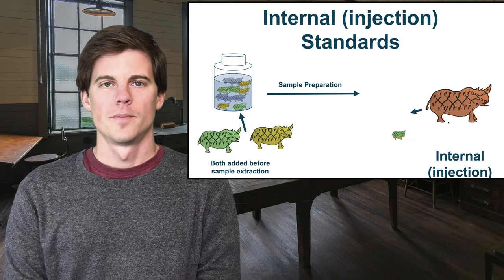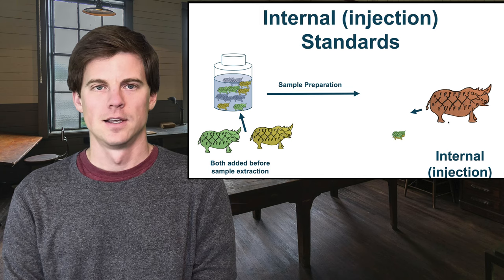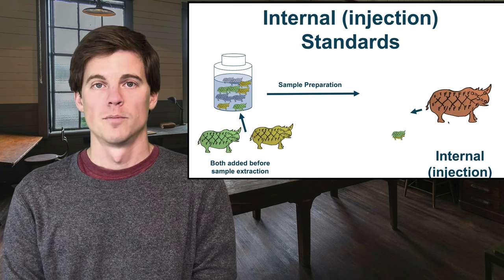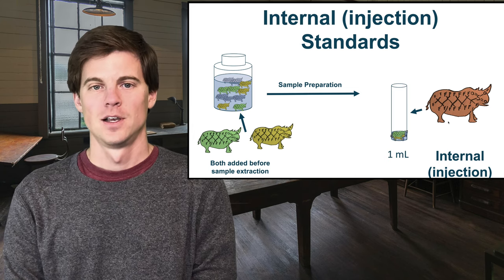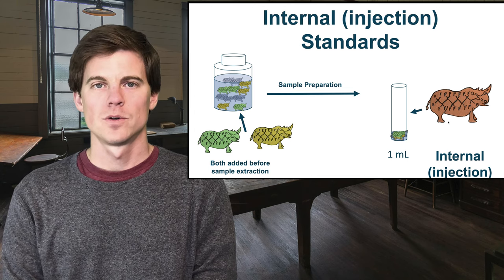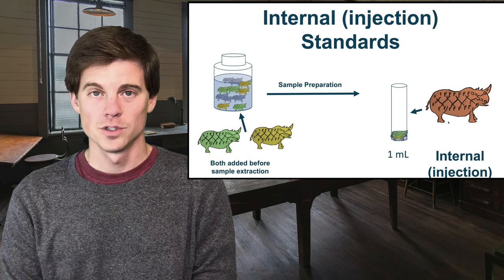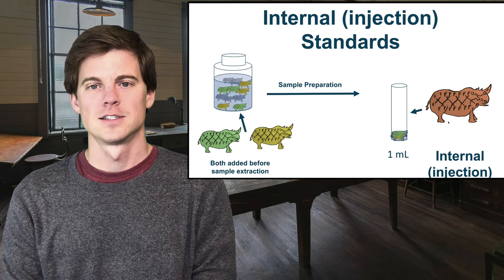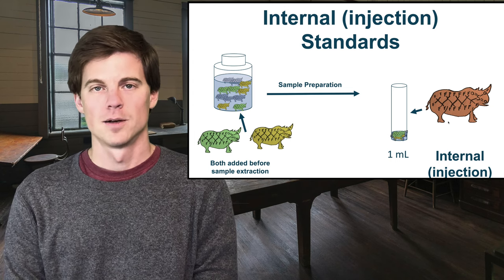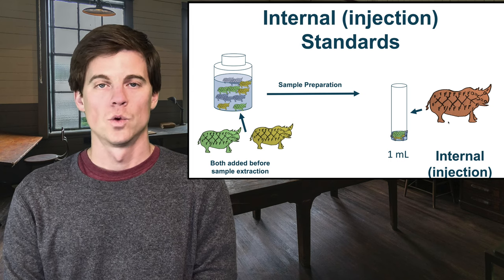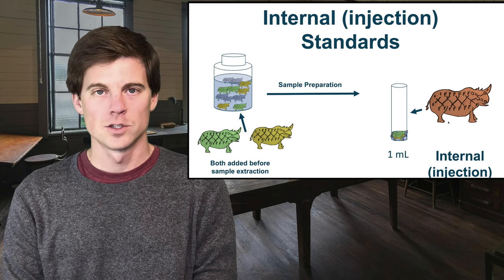Injection internal standards are very similar — they would also be something labeled, like a 13C compound — but instead of being added like the other two before sample preparation, they're added to your final extract after sample preparation. This means they can perform multiple roles: the internal standard can be used to measure how much surrogate or isotope dilution standard was lost during extraction. Since it's added after extraction, it only accounts for instrumental bias, not losses through sample prep. Alternatively, you can use it to quantify your entire suite of native compounds — that's called the internal standard quantitation method, which is what's used in method 537.